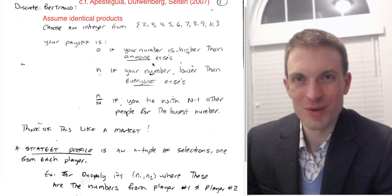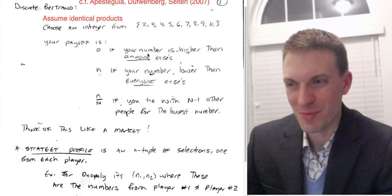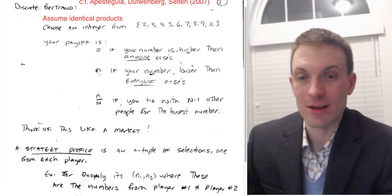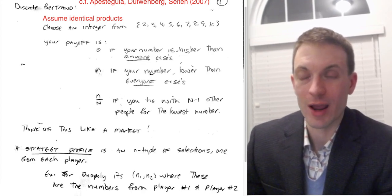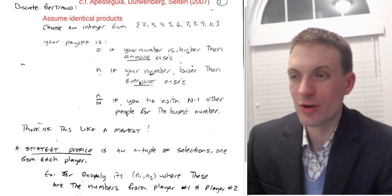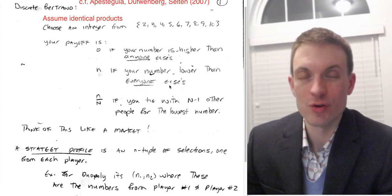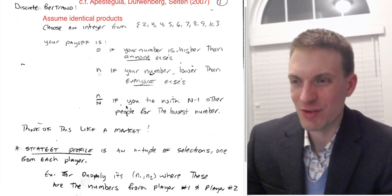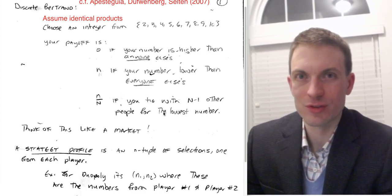So think about a firm. They set a price higher than anybody else's, they're going to be undercut. So we'll get a price to look at profits of 0. We'll say the payoff is N. They receive just their number as their payoff if their number is lower than everyone else's. If you're the low price firm, you capture the market. We'll just say your profits are whatever your number is. And then N divided by big N if you tie with N minus 1, big N minus 1, other people for the lowest number.